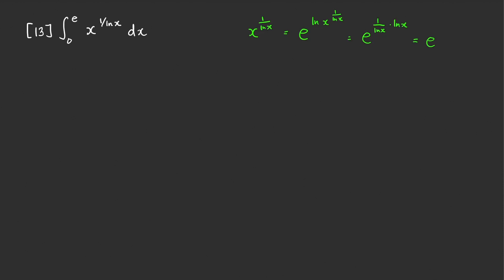Therefore, our integral can be written as the integral from 0 to e of e dx. And e is just a constant, so this is equal to e·x evaluated from 0 to e. That is equal to e squared minus 0, which is equal to e squared.